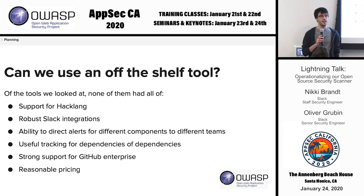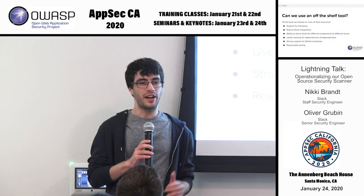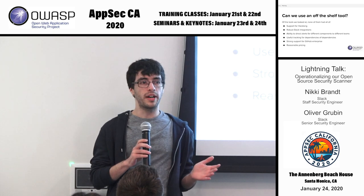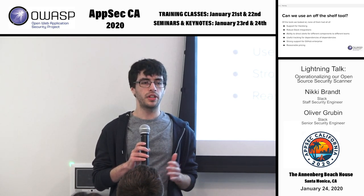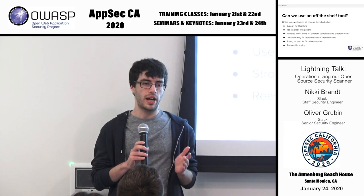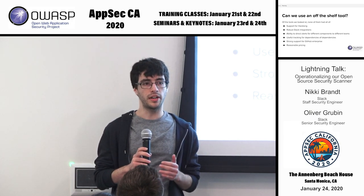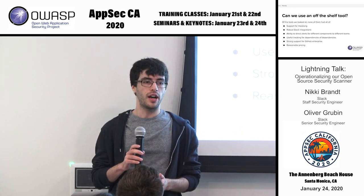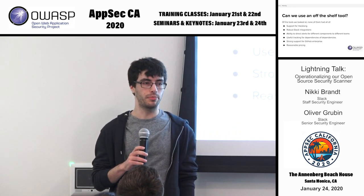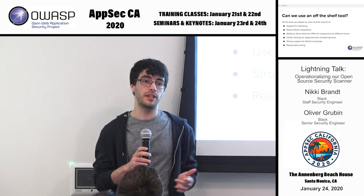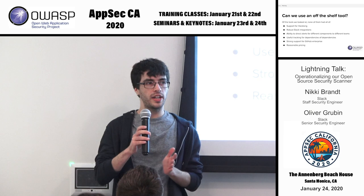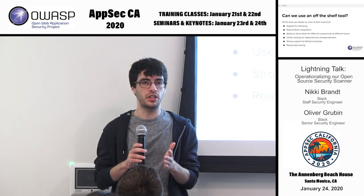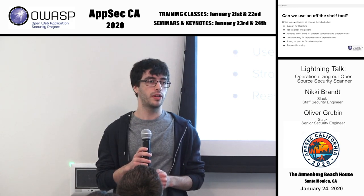We wanted something with robust Slack integration. Probably unsurprisingly, at Slack we use Slack a lot. We have different channels and a very defined workflow to route issues and alerts to different places. Most tools had only rudimentary Slack alerts that weren't very customizable. We're a very sophisticated user of Slack. As part of that, we wanted the ability to direct alerts for different components to different teams. When there are 3,000 dependencies, we can't just have them all go to the same three people. We needed a way to mark different things for different people and route them in different ways, as well as bringing them all into one centralized place for the product security team to keep track of how things were changing.